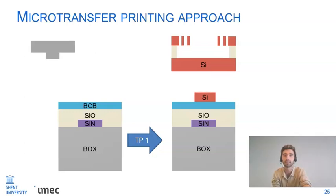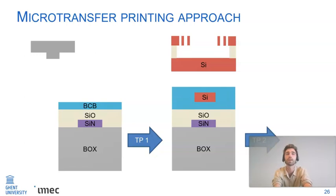In the next step, more bonding layer is then also spin-coated on top and an optical amplifier can be added in the same way.